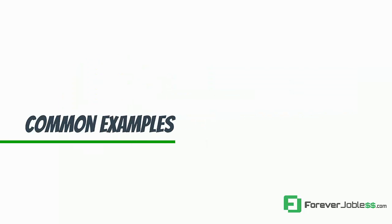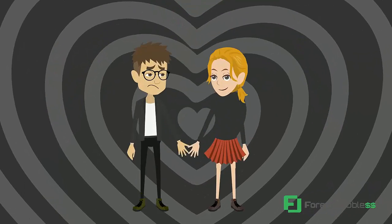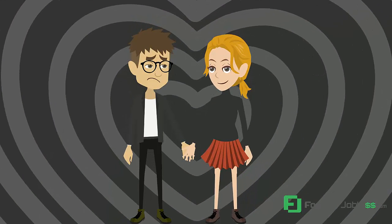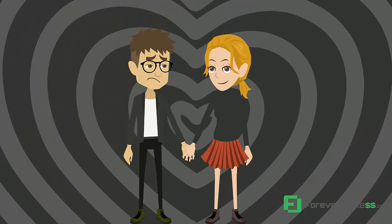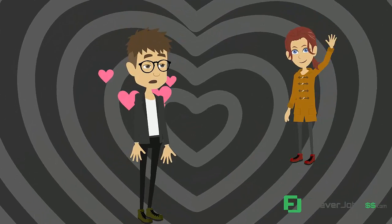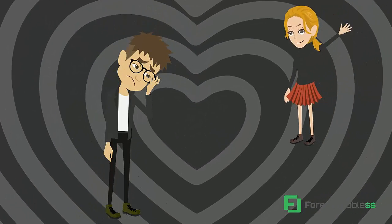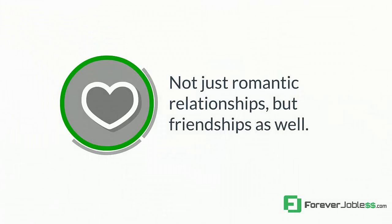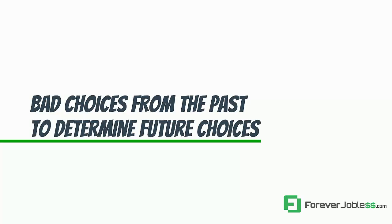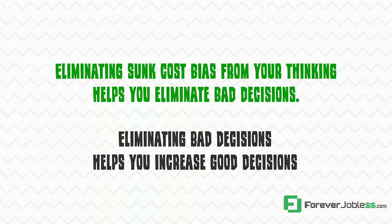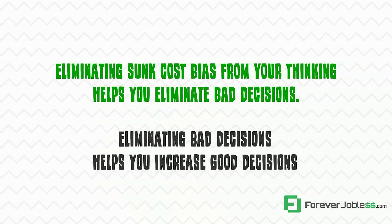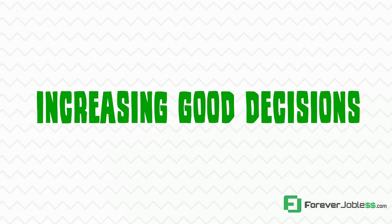Let's look at some common examples where you may be allowing the sunk cost fallacy to negatively influence your life. Relationships — how many of us have stayed in crappy relationships because we've invested so much time already? Even when it's obvious it's not a fit, we choose to continue because we feel like we've already invested so much in it. Instead of freeing our time for someone who's a better fit, we stay involved with someone who's obviously not because of sunk cost bias. Not just romantic relationships, but friendships as well — how many friendships that do not serve you are you still holding on to because of the time you already have invested? Eliminating sunk cost bias from your thinking helps you eliminate bad decisions, which increases good decisions, which ultimately increases your happiness.